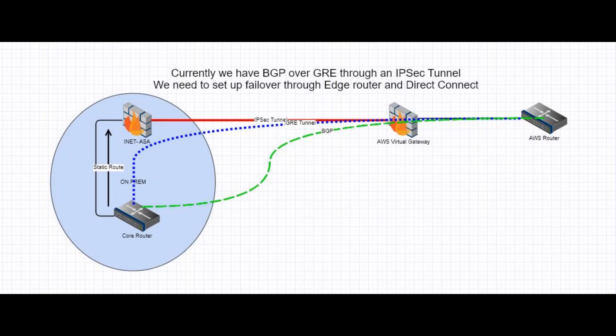From the core router, the BGP neighborship IP is in fact the GRE destination address — the GRE interface IP on the AWS router, and vice versa. The GRE destination is the IP that is actually being transported over the IPsec tunnel. So as far as the INIT ASA and the AWS Virtual Gateway are concerned, they are just transporting the GRE tunnel traffic between the GRE source and GRE destination. As far as the router is concerned, the BGP neighbor is reachable through the GRE tunnel.